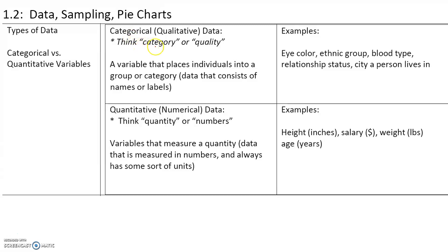For categorical data, think of categories or qualities. A variable that places individuals into a group or category is called a categorical or qualitative variable. In other words, this is data that consists of names or labels.